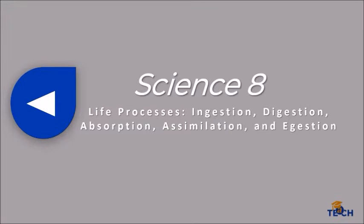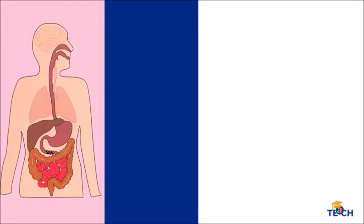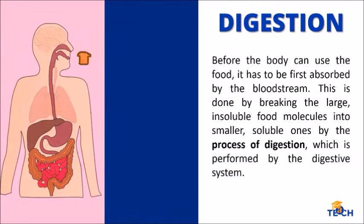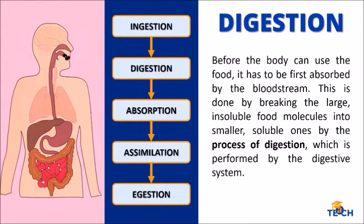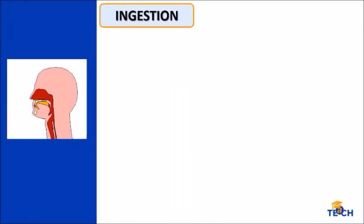Hi learners, today we will be talking about life processes: ingestion, digestion, absorption, assimilation, and egestion. Have you ever wondered what happens to the food after it has been eaten? Before the body can use the food, it has to be first absorbed by the bloodstream. This is done by breaking the large insoluble food molecules into smaller soluble ones by the process of digestion, which is performed by the digestive system. The process of nutrition in humans involves five steps.